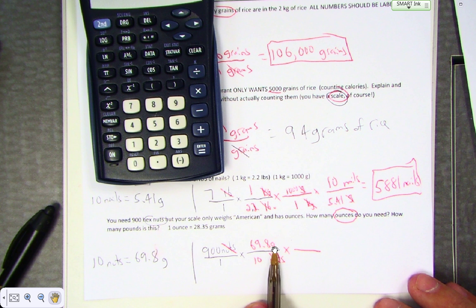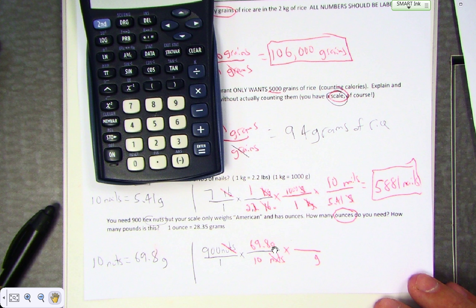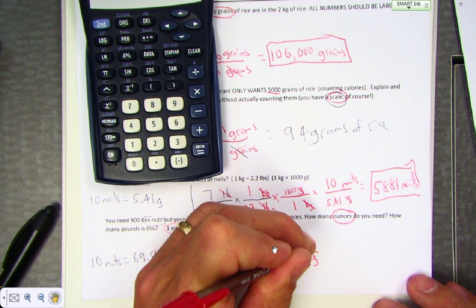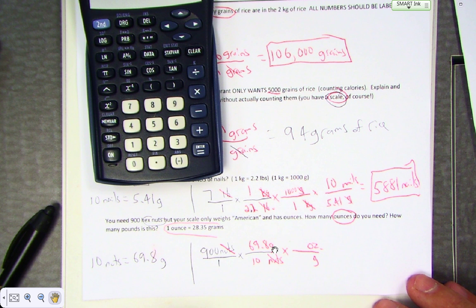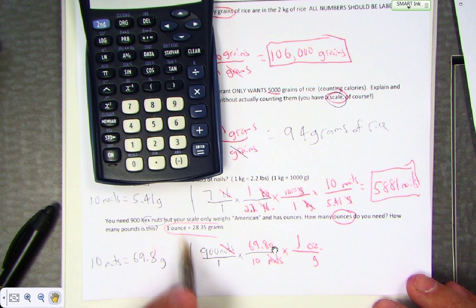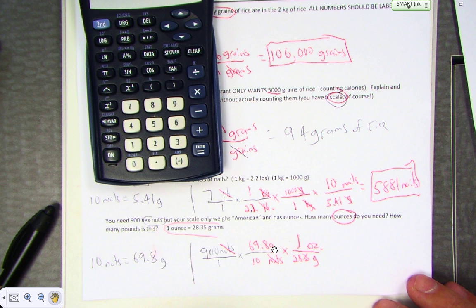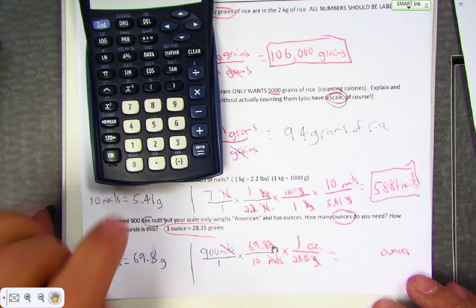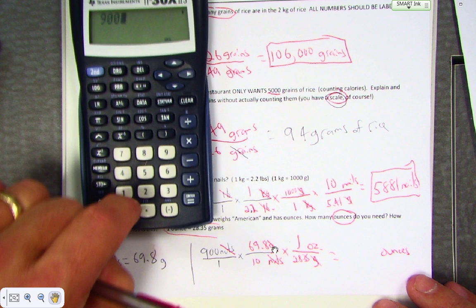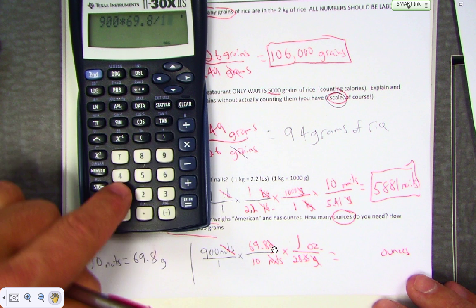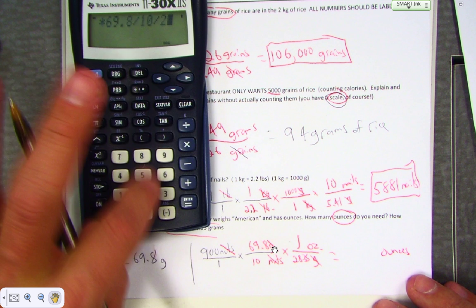But that would leave me grams on top. I don't want grams on top, so put it on the bottom. What do I want on top? I want ounces. If I can find a relationship between grams and ounces, there it is: one ounce equals 28. So I want ounces, so I'm going to put ounces—oz, strangely enough. Grams versus ounces: 1 goes next to ounce, 28.35 goes next to gram. Grams and grams crosses off. The only unit that doesn't is ounces. 900 times 69.8 divided by 10, but also divided by 28.35.